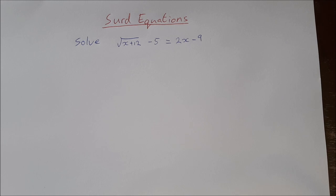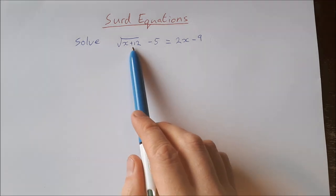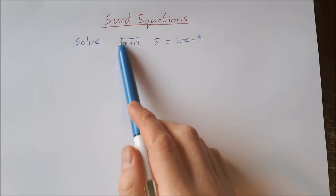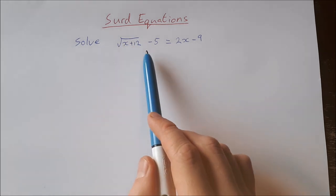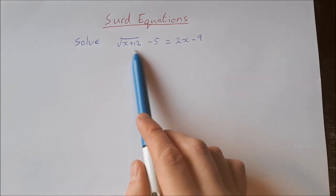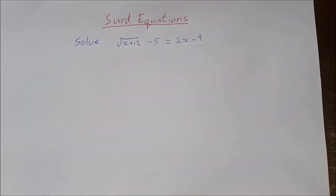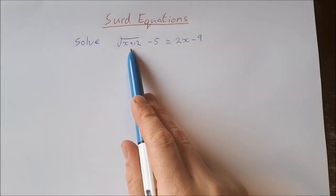In this video we're going to take a look at another type of radical equation — one where you have a square root sign in it, and you need to get rid of the square root sign in order to solve. With this one, we're going to end up with a quadratic equation after we get rid of our square root sign, and that's going to lead us to another issue that we'll have a look at towards the end of the video.